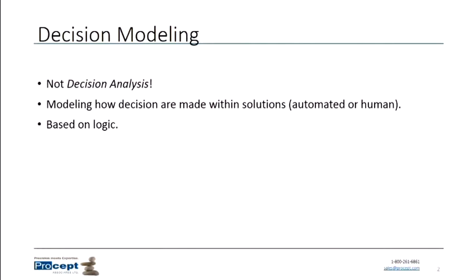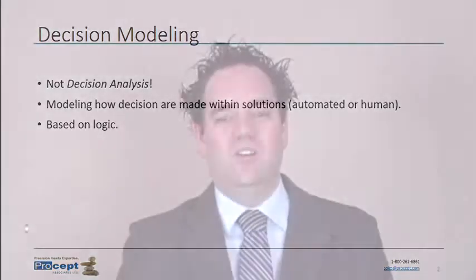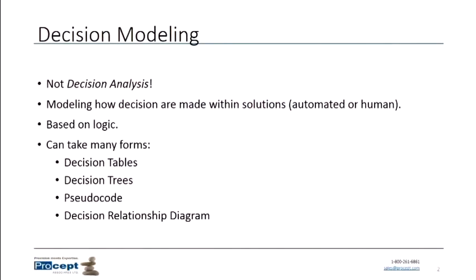Decision modeling is based on logic — that branch of mathematics dealing with AND, OR, NOT, and all of those concepts. Our decision modeling can take a lot of different forms: we can do a table, a decision tree, we can write some pseudocode, and we might do a decision relationship diagram. There are a lot of different ways to model, share, and collaborate with stakeholders on a decision model.